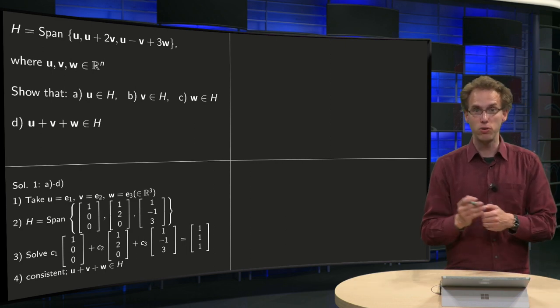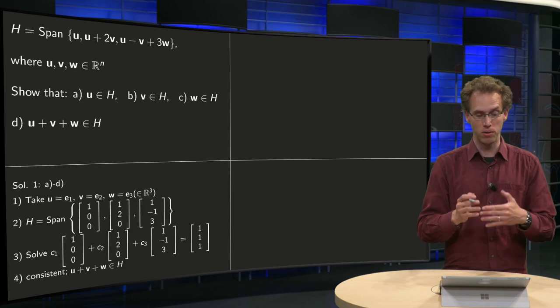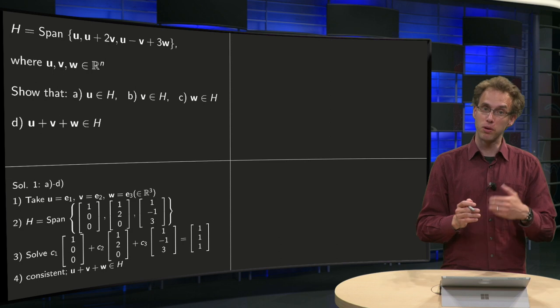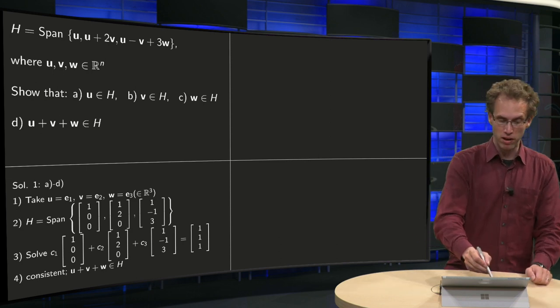And then U plus 2V becomes (1,2,0). So U minus V plus 3W becomes (1,-1,3). So H will be the span over here.